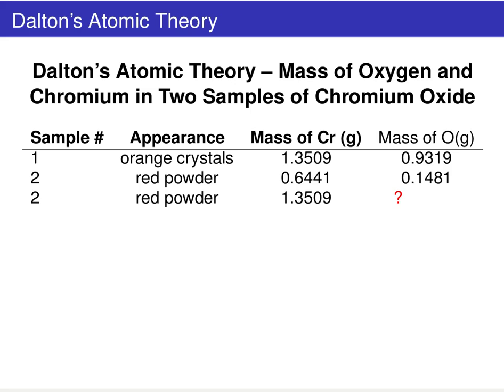This first set of data involves chromium-oxygen compounds. Both compounds contain only oxygen and chromium, but they are different types of compounds. You can see this by their appearance — sample one looks like orange crystals, whereas sample two looks like red powder.